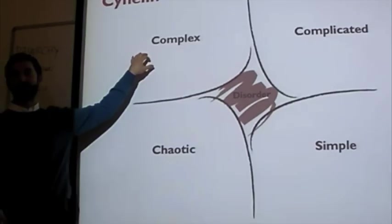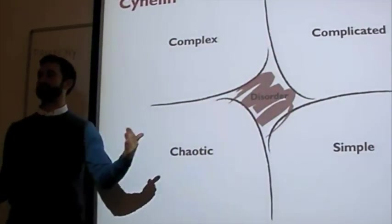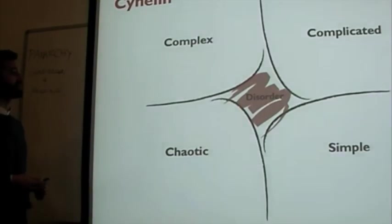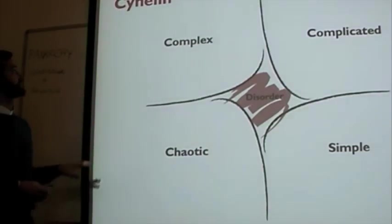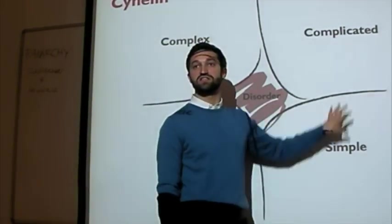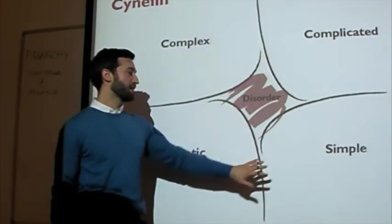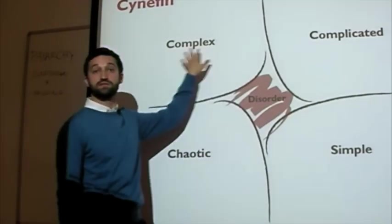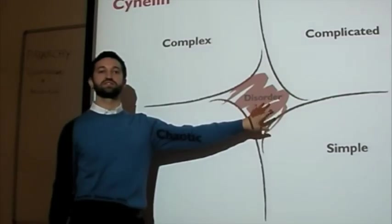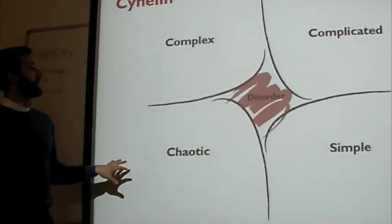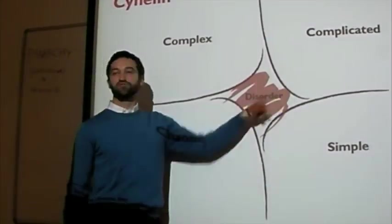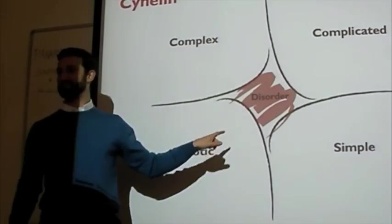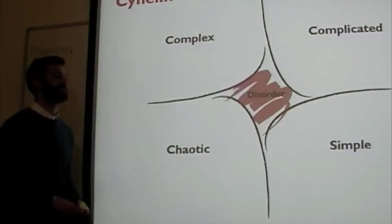I want to briefly introduce the Cynefin framework by Dave Snowden, one of the gurus of knowledge management and quite active in policy formation nowadays through his consultancy Cognitive Edge. This is a framework of different types of knowledge in different types of environment. I drew this myself. There's a lot of crap drawings of this online, so I figured if I'm going to be referencing it I should do my own and I'll put this online for anyone else who wants to use it.